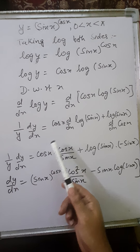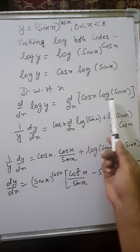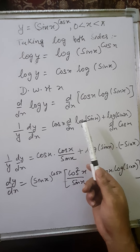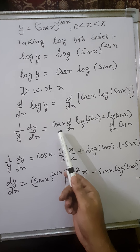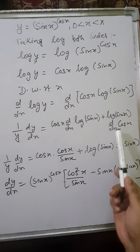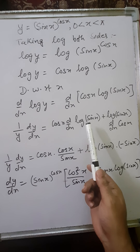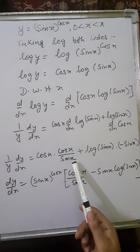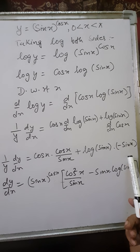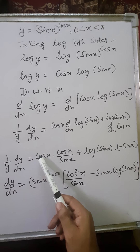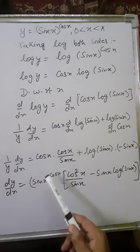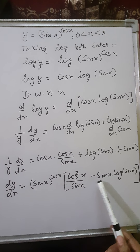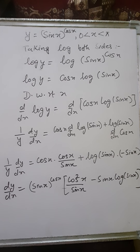Differentiating with respect to x: d/dx of log y equals d/dx of cos(x) log sin(x). The derivative of log y is 1/y dy/dx. The right-hand side is a product of two functions — trigonometric and logarithmic — so we apply product rule: first function times d/dx of second plus second function times d/dx of first. This gives cos(x) times d/dx of log sin(x) plus log sin(x) times d/dx of cos(x). The derivative of log sin(x) is cos(x)/sin(x), and the derivative of cos(x) is −sin(x). Cross-multiplying y and substituting y = sin(x)^cos(x), the derivative is sin(x)^cos(x) times [cos²(x)/sin(x) − sin(x) log sin(x)].